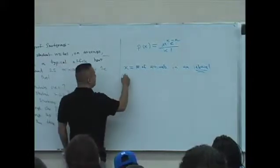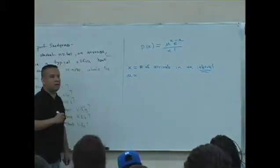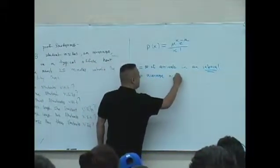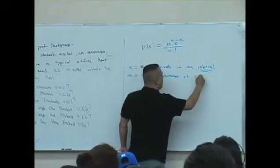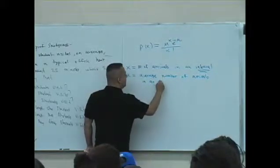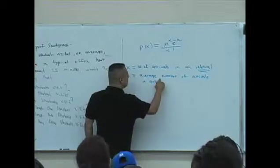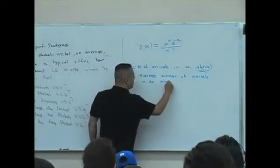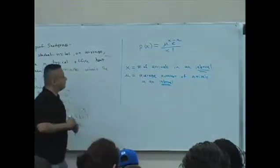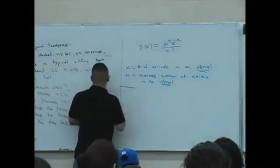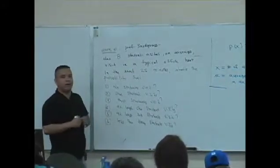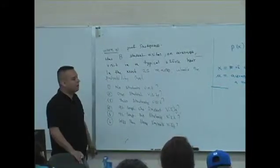What is mu? It's the average number of arrivals — but it's the average number of arrivals in the interval that we're talking about. And so in this problem here, if you notice that students are actually arriving in an office hour. For this setting, students are arriving in some office hour.